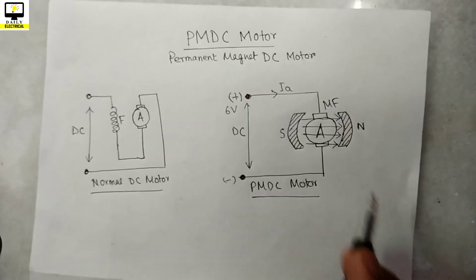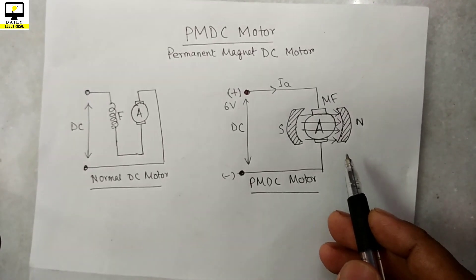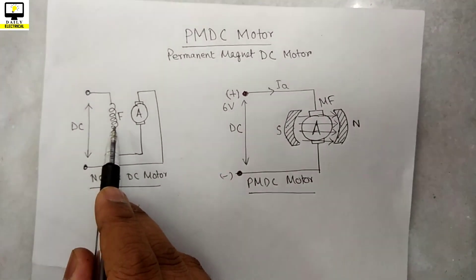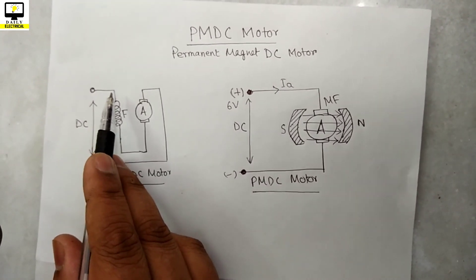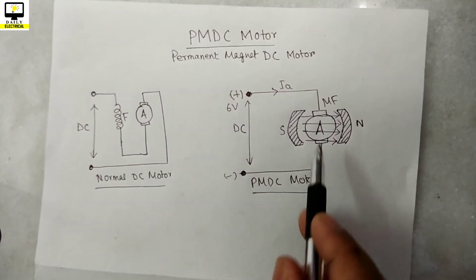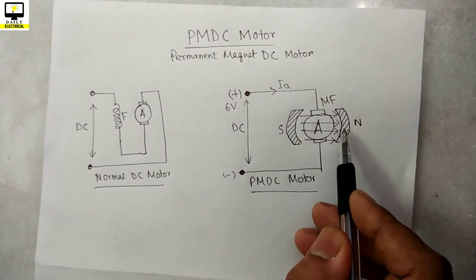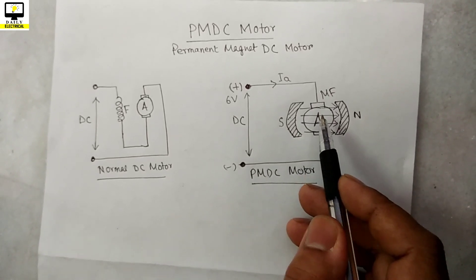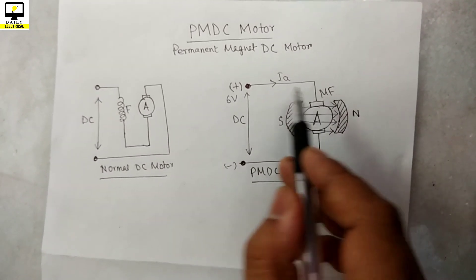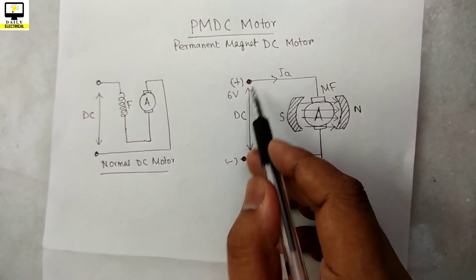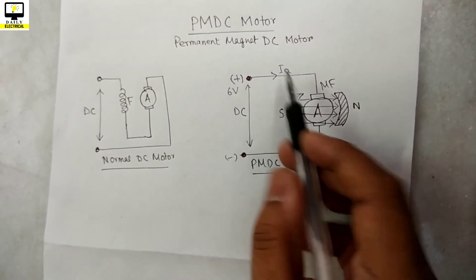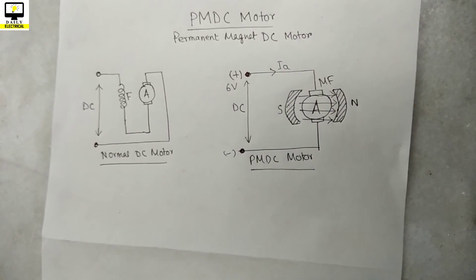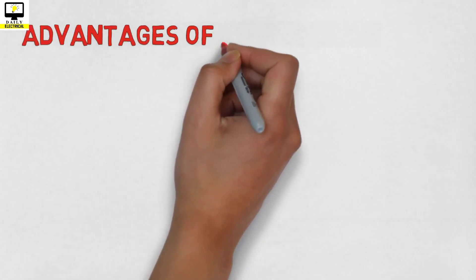Now coming to speed control — how can we control the speed of a PMDC motor? In a normal DC motor, we can control speed in two ways, including controlling the field flux by increasing or decreasing the current. But in a PMDC motor, you cannot control the field flux because the fields are already fixed by the permanent magnets. Here you can only control the armature current, and you do this by increasing or decreasing the potential difference applied at the two terminals. By increasing the potential difference, a higher amount of armature current will flow and the motor speed will increase.